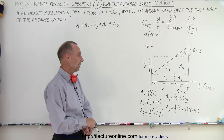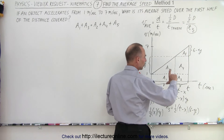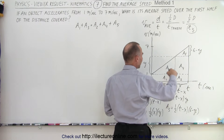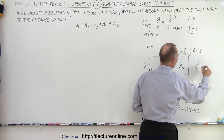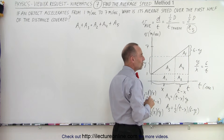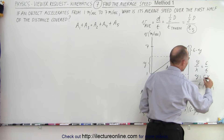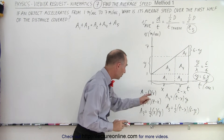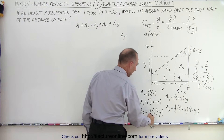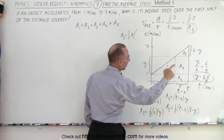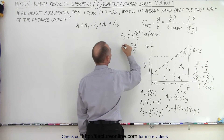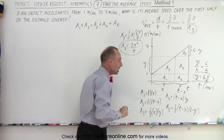Now I can use the relationship from congruent triangles: the ratio of y over x must equal the ratio of 6 over t, because the triangles are similar. That means y equals 6x over t, so I can eliminate y from all equations. For example, A3, instead of one-half x times y, becomes one-half x times 6x over t, which simplifies to 3x squared over t.